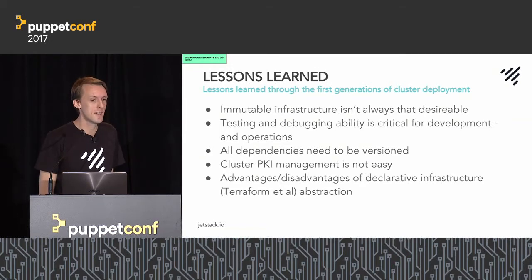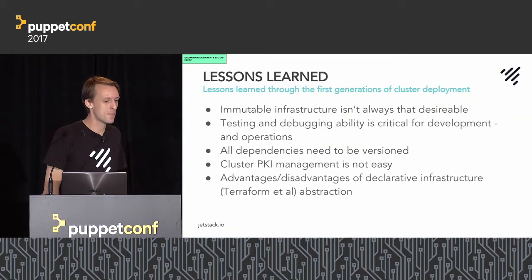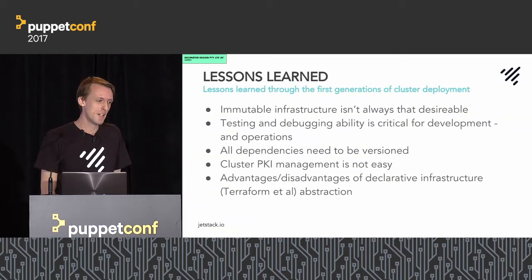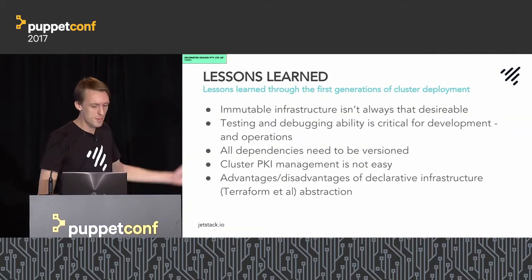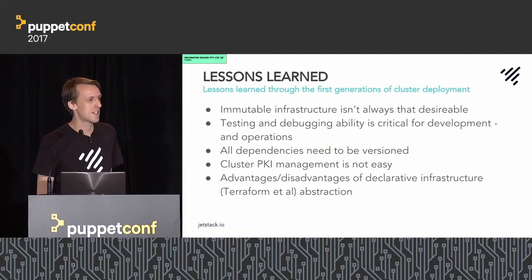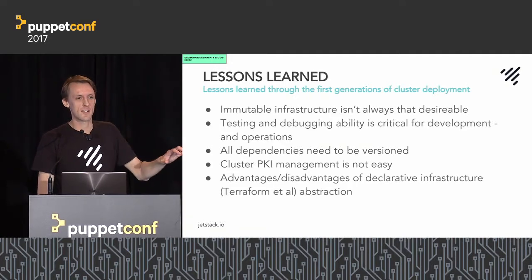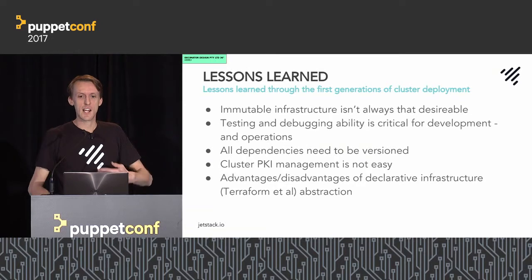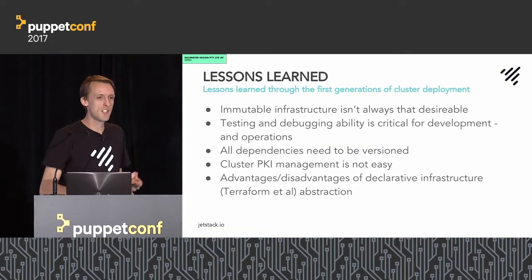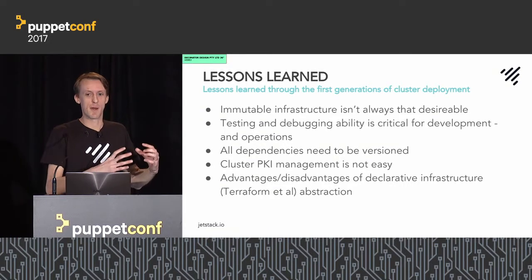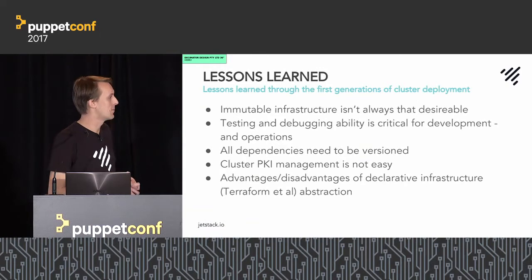The problem remained that we had horrible shell scripts responsible for standing up all the various Kubernetes components — lots of environment variables, lots of components to get working. A key lesson learned: you don't always want things to be immutable. There are cases where you don't want to trash your entire cluster and bring up new instances — it can be really quite expensive. Even with relatively small clusters, that was quite painful.